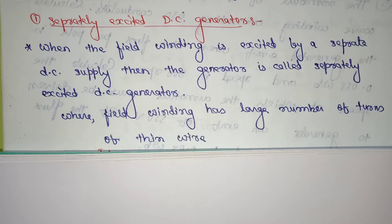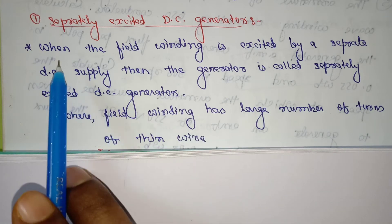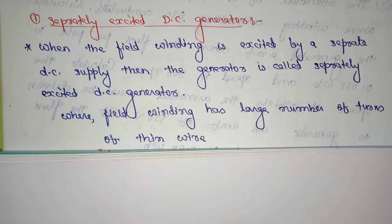So first, what is a separately excited DC generator? 'Separately excited' means we have to give a separate excitation — a separate DC supply. When the field winding is excited by a separate DC supply, then the generator is called a separately excited DC generator. This is the definition for the separately excited DC generator.